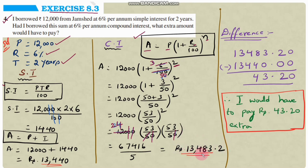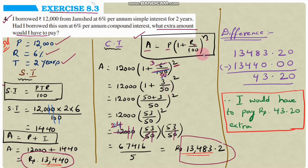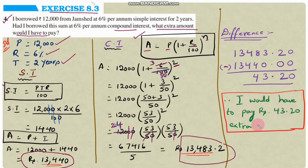The amount under compound interest is rupees 13,483.2 and under simple interest is rupees 13,440.00. Subtracting: 13,483.2 − 13,440.00 = rupees 43.20. Therefore, I would have to pay rupees 43.20 extra if the sum were borrowed at compound interest instead of simple interest.